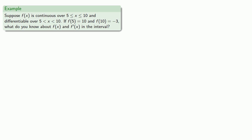So, for example, suppose my function is continuous over the closed interval between 5 and 10 and differentiable over the open interval between 5 and 10. If we know where we are at 5 and at 10, what do we know about both our function and our derivative in the interval?